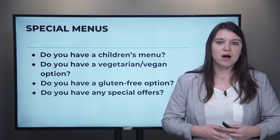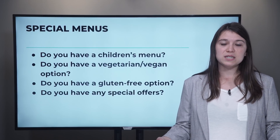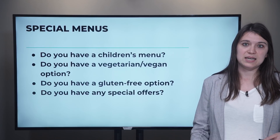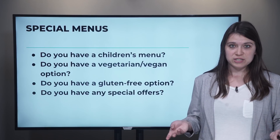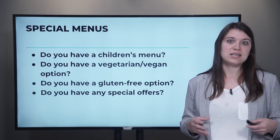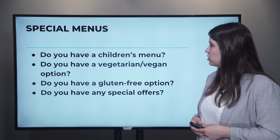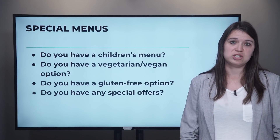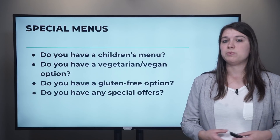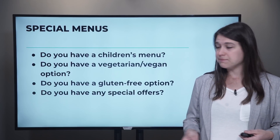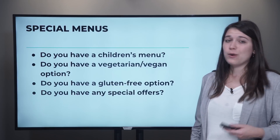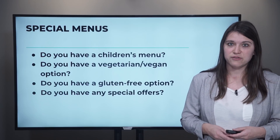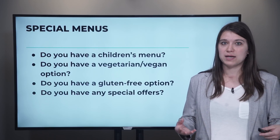When you are ordering food, maybe you're ordering for your whole family. You might want to ask the restaurant if they have a children's menu, because many times the items will be different — the food will be different or maybe smaller portions, and the price will be lower. Do you have a vegetarian or vegan option? If you're vegan or vegetarian, maybe the restaurant would be willing to prepare something without meat. If you have celiac disease, do you have a gluten-free option? You might need to ask that if you're not able to eat bread, pasta, or things like that.